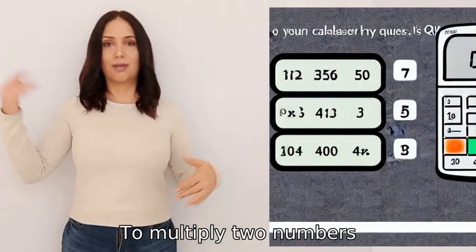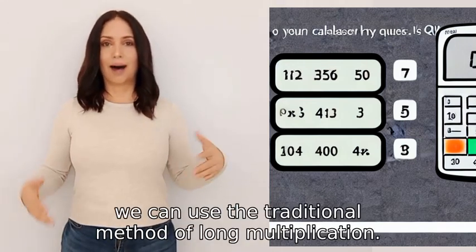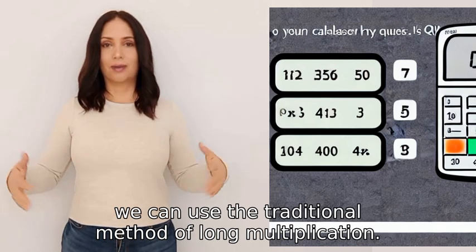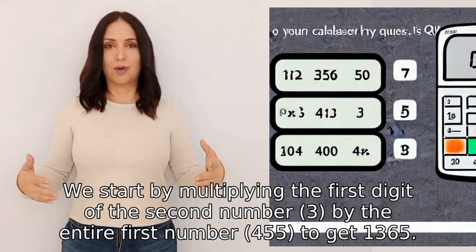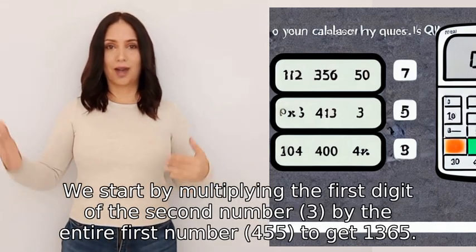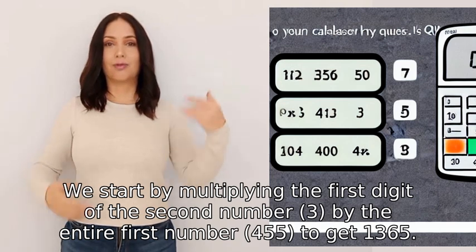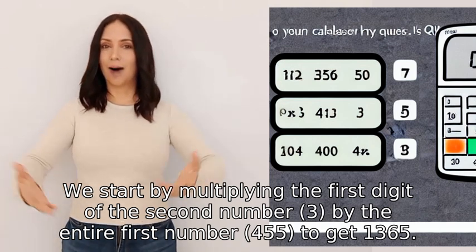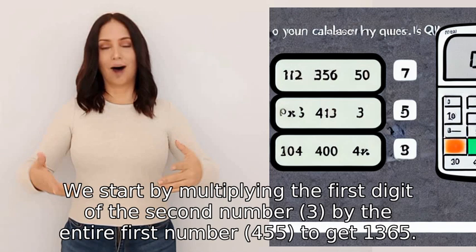To multiply two numbers, we can use the traditional method of long multiplication. We start by multiplying the first digit of the second number (3) by the entire first number (455) to get 1,365.